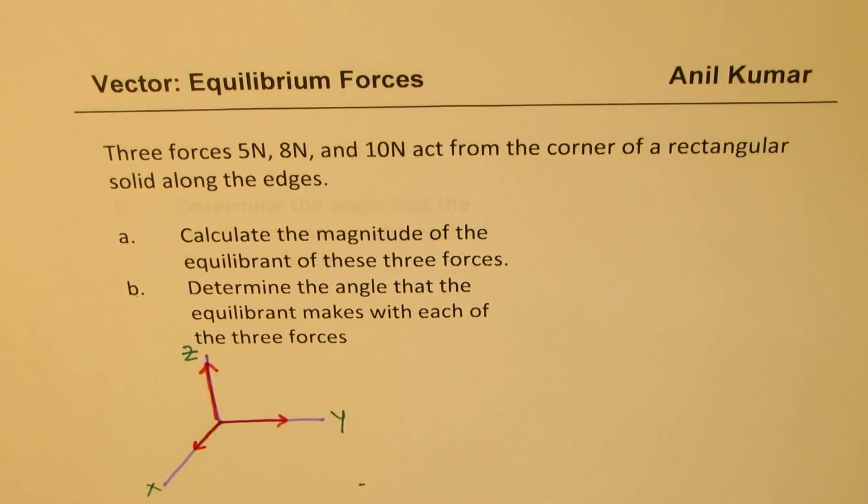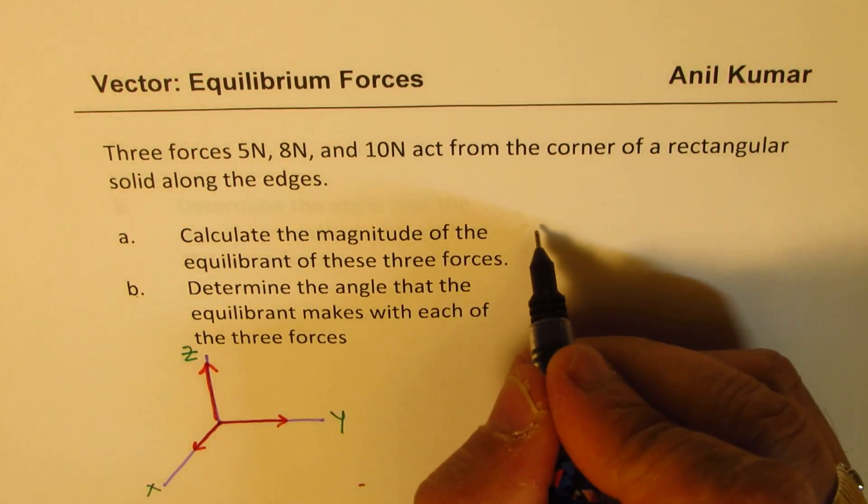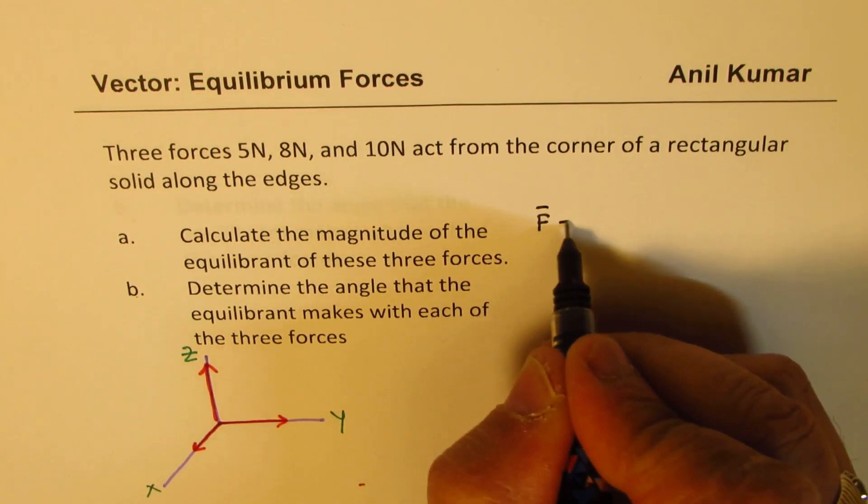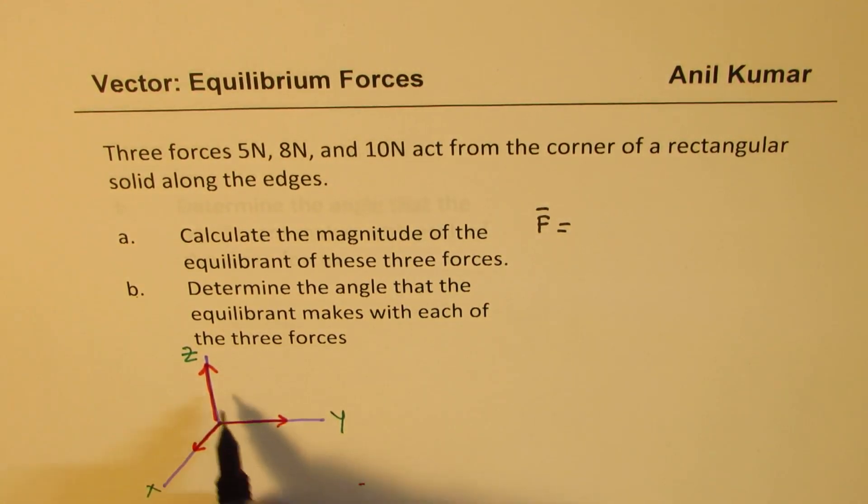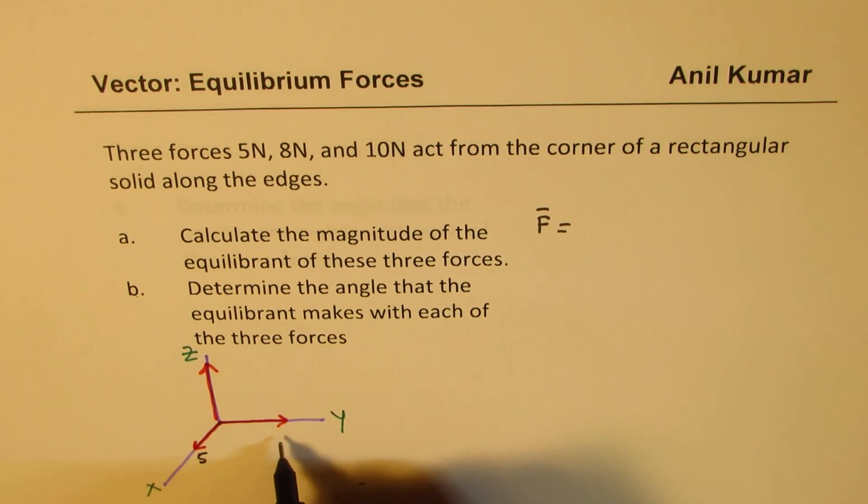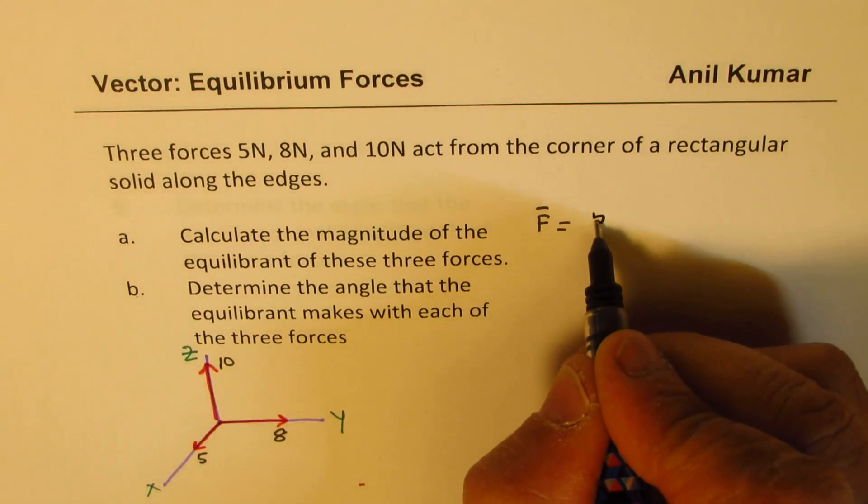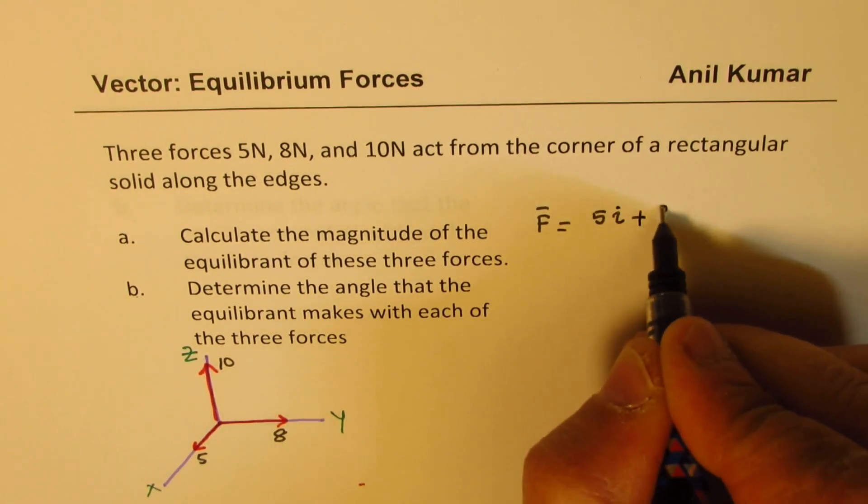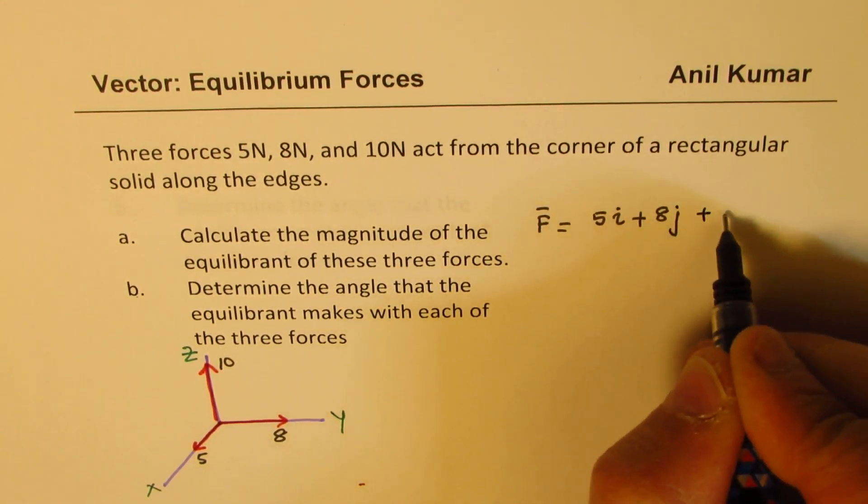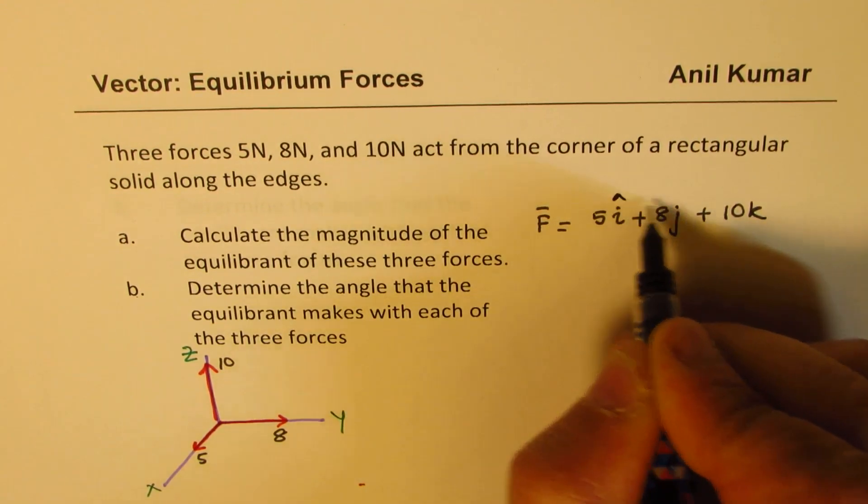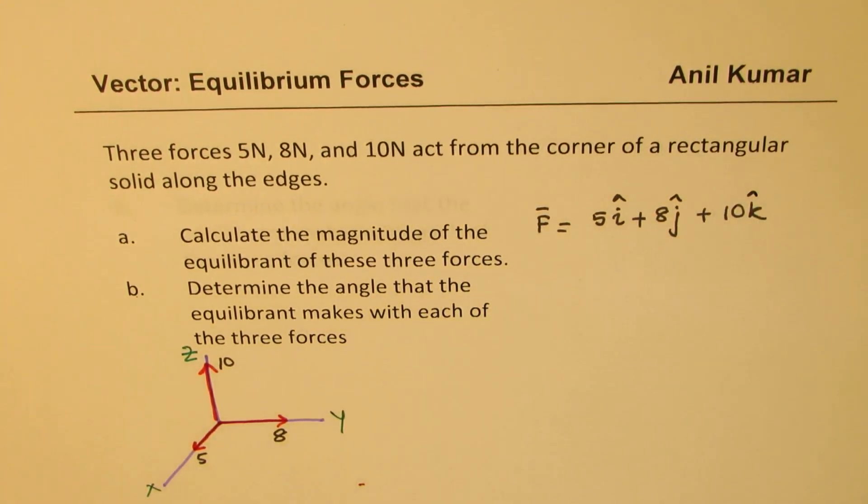So these forces now can be written as: The net force is combination of all three of them. This is five, this is eight and that is ten. So we write this as 5i plus 8j plus 10k where i, j, k are unit vectors along x, y and z.